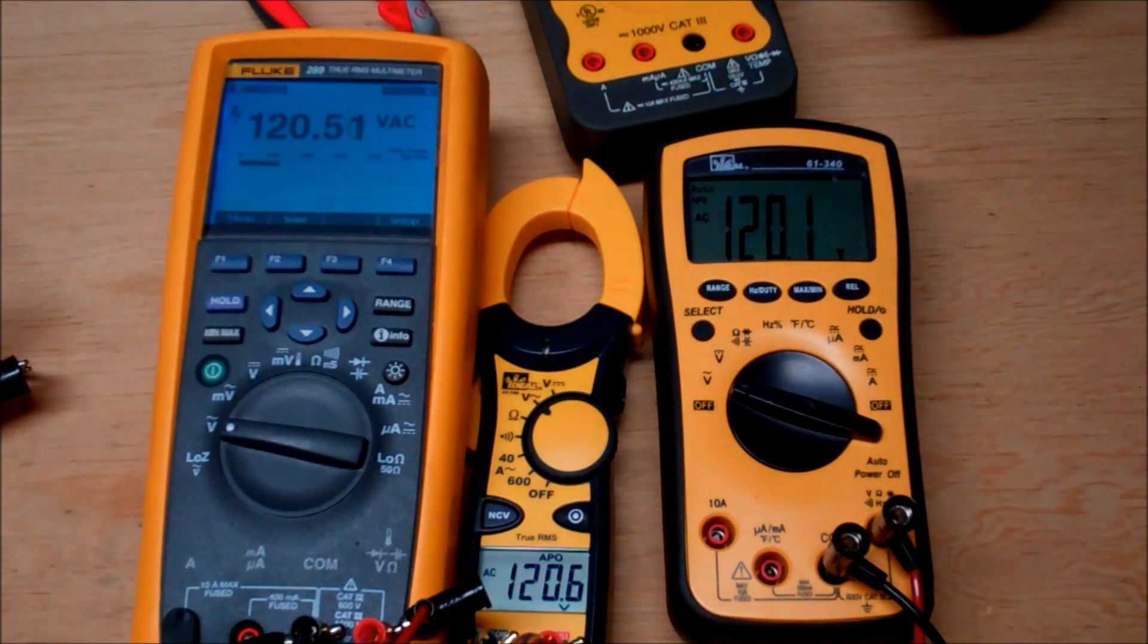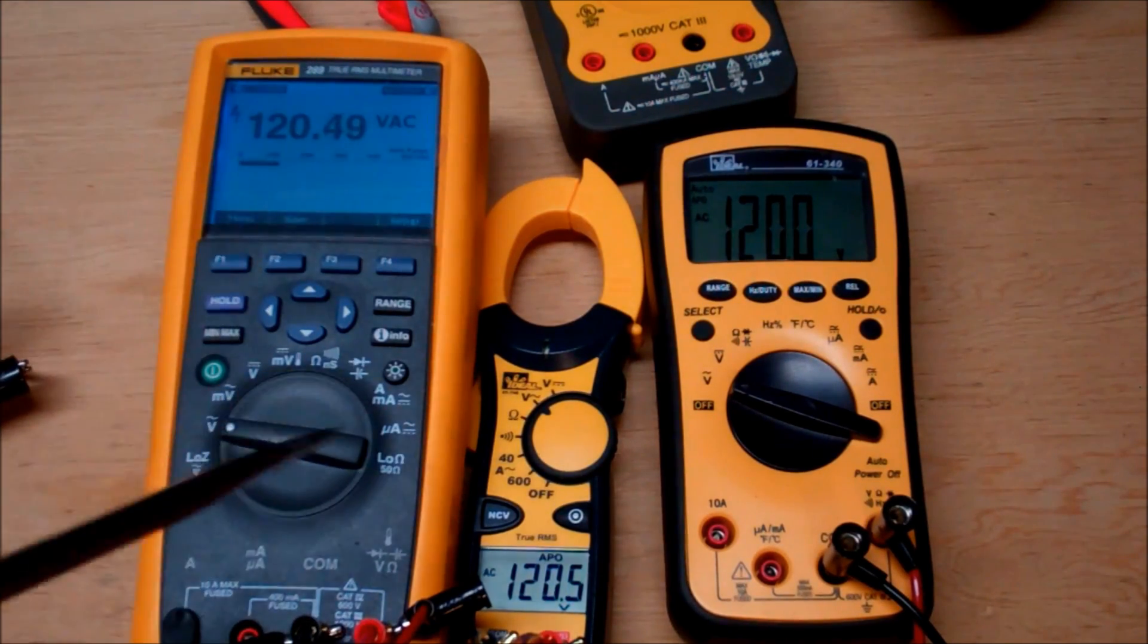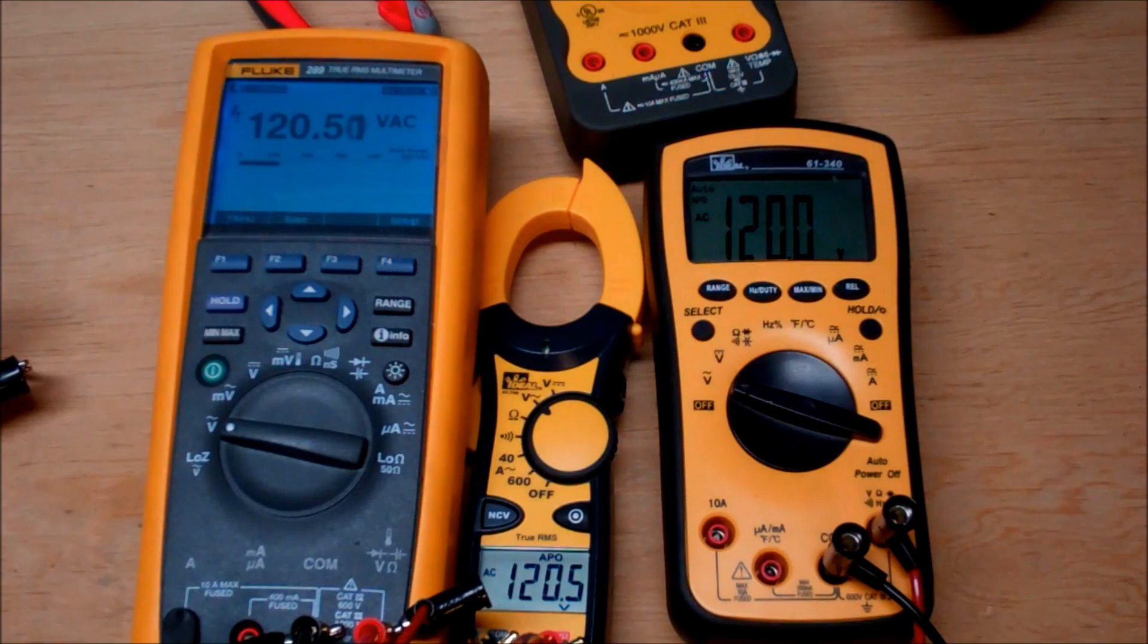Now the 61 340 here is not a true RMS meter. And as you can tell, the reading is not as accurate as what these two are capable of doing. It's an expensive feature to get integrated into your multimeter, but it's well worth it, as you can tell, if accuracy is important to you.